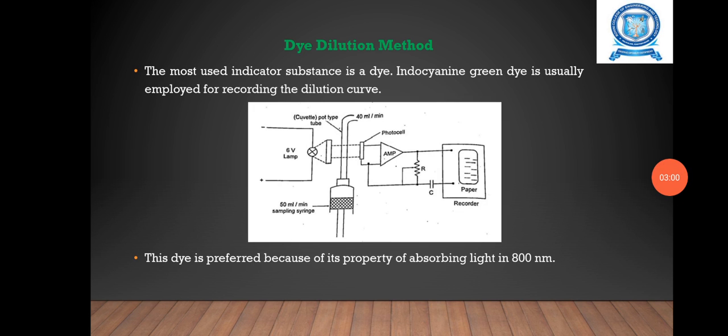The next one is dye dilution method. The most common indicator substance is dye. Indocyanine green dye is usually employed for recording the dilution curve. This dye is preferred because of its property of absorbing light at 800 nm. The concentration of cardio green is measured with the help of an infrared photocell transducer.